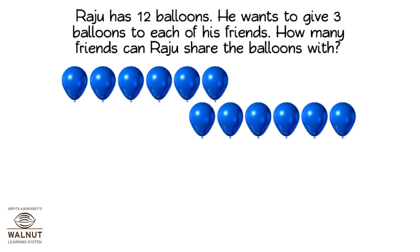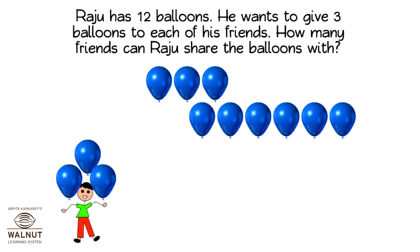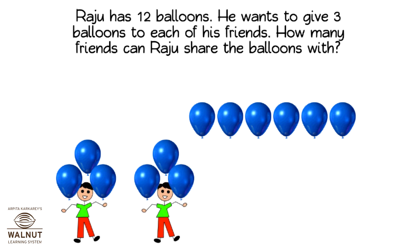We take away three balloons and give them to one child. There are nine balloons left. Then we take away three more balloons and give them to another child. So it's two children who have balloons. There are six balloons left.